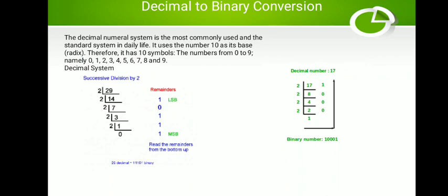The representation of the fractional part is opposite to the integer part. For the integer part, we arrange the remainders from bottom to top, but for the fractional part we arrange from top to bottom. So top is the MSB and bottom is the LSB for the fractional part, while the integer part is obtained by the repeated division method.